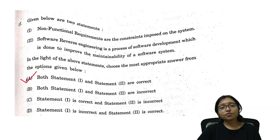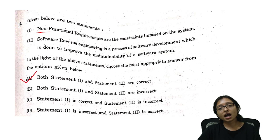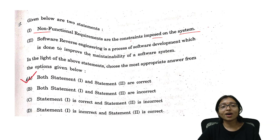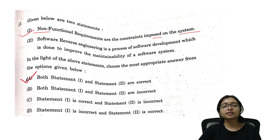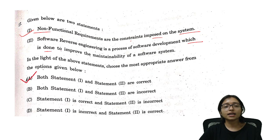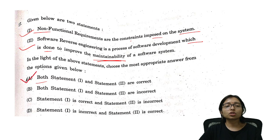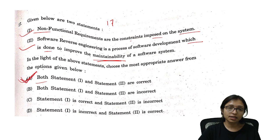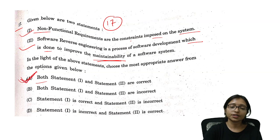Questions 16 and 17: Non-functional requirements are constraints imposed on the system focusing on quality — statement one is correct. Software reverse engineering is the process done to improve maintainability — also correct. Both statements are correct, so option A is the correct answer for question 17.